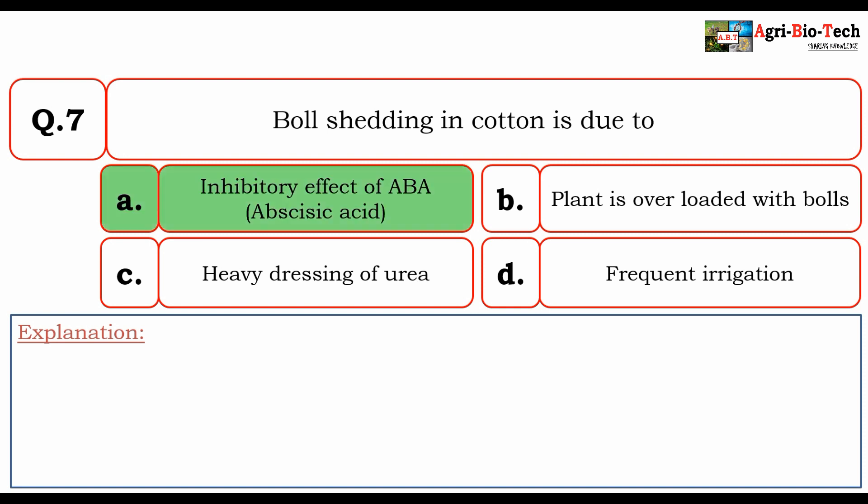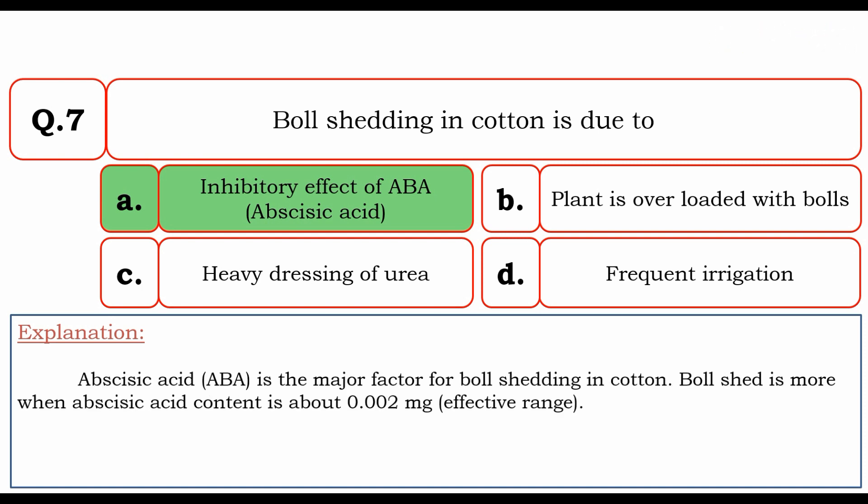The correct option is A. Inhibitory effect of abscisic acid (ABA). ABA is the major factor for boll shedding in cotton. Boll shedding is more when abscisic acid content is about 0.002 mg. So the correct answer is A. Inhibitory effect of ABA.